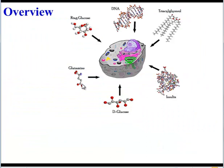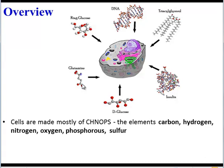Quick review about cells. All cells contain the element CHNOPS in very high abundance. In other words, they're mostly made of carbon, hydrogen, nitrogen, oxygen, phosphorus, and sulfur.